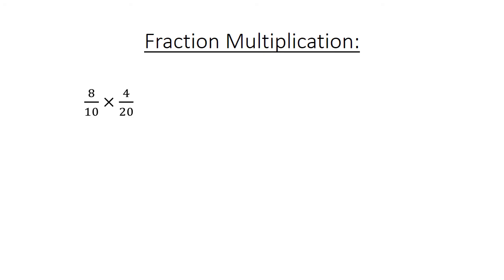Fraction multiplication: 8 over 10 times 4 over 20 equals 32 over 200. Simplify to 4 over 25.